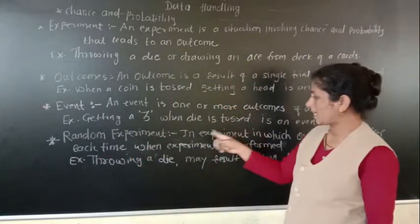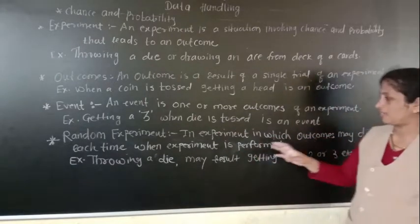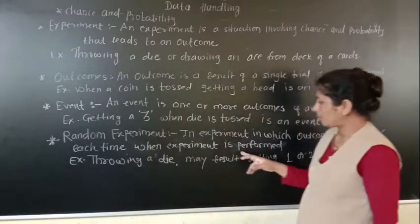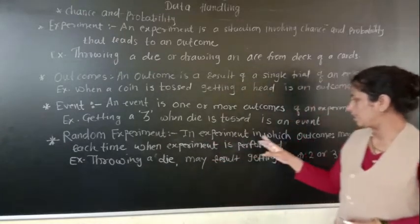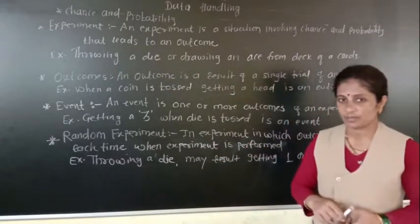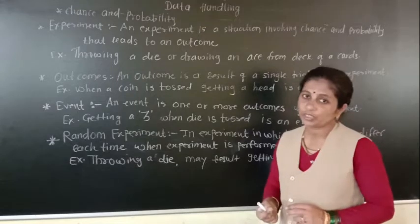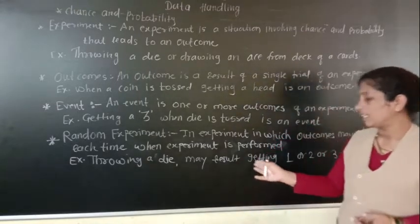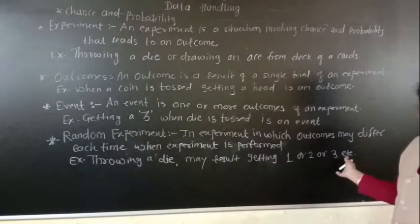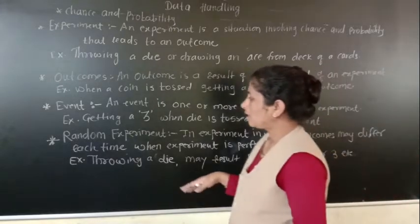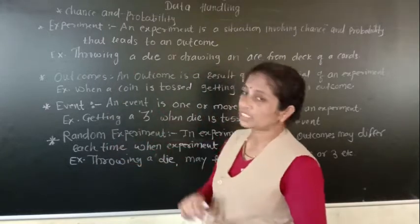Next is random experiment. A random experiment is an experiment in which outcomes may differ each time the experiment is performed. When you are performing any experiment, you will get outcomes that may differ each time. For example, when you throw a die, you will get results that may be one, two, three, etc. Such a type of experiment is called a random experiment.